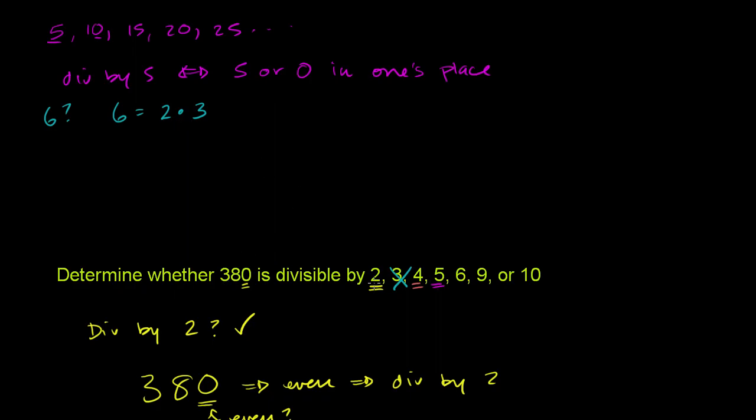Now, 380 is divisible by 2, but we've already established that it is not divisible by 3. If it's not divisible by 3, it cannot be divisible by 6. So this gets knocked out. We are not divisible by 6.